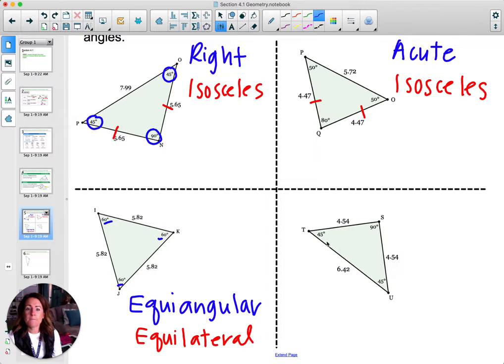Next one, 45, 90, 45. So we get a right triangle. And then looking at the sides, 4.5 and 4.5 are the same. So we have isosceles.